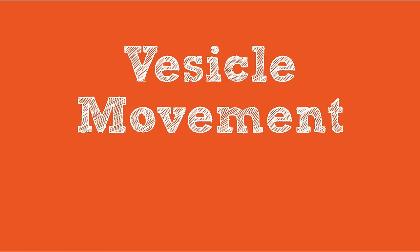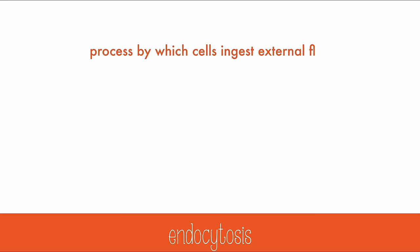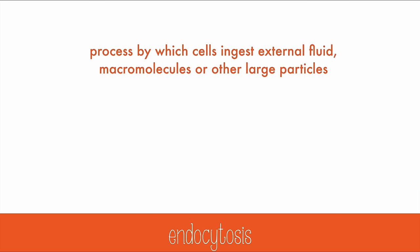Another way that cells do active transport is through vesicle movement, either endocytosis or exocytosis. Endocytosis brings items into the cell, and exocytosis pushes them out of the cell. Endocytosis is the process by which cells ingest external fluid, macromolecules, or other large particles, even other cells.